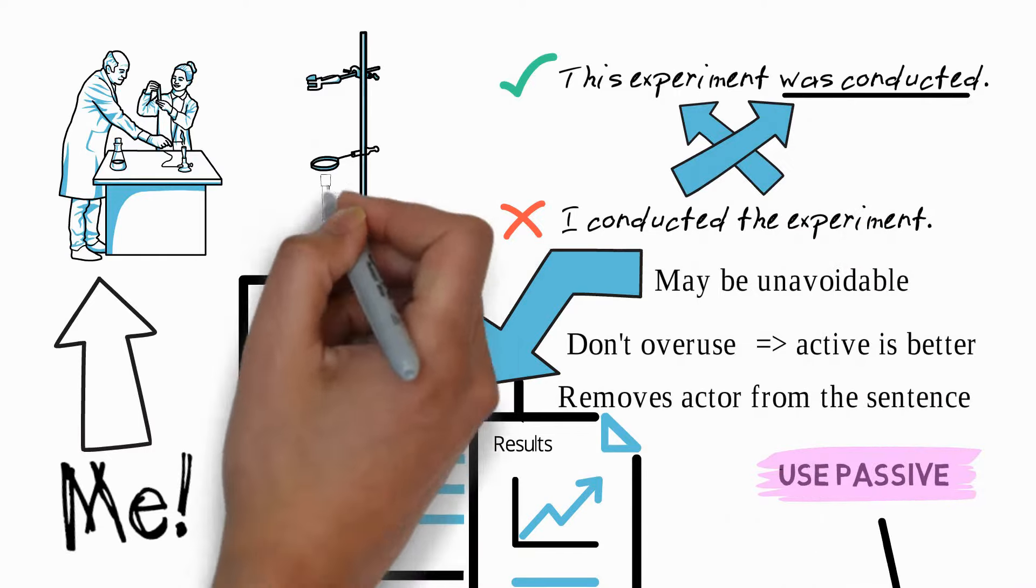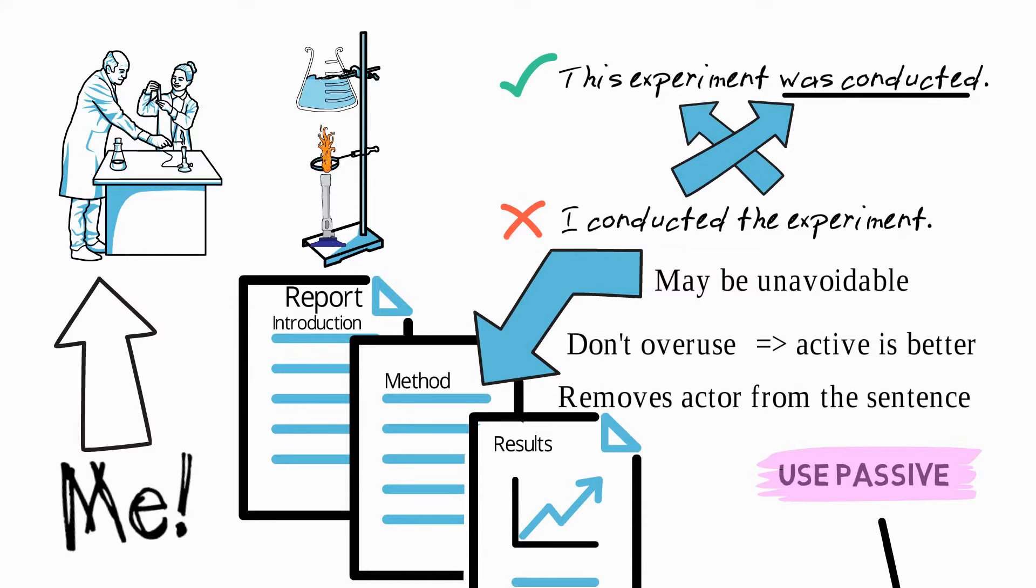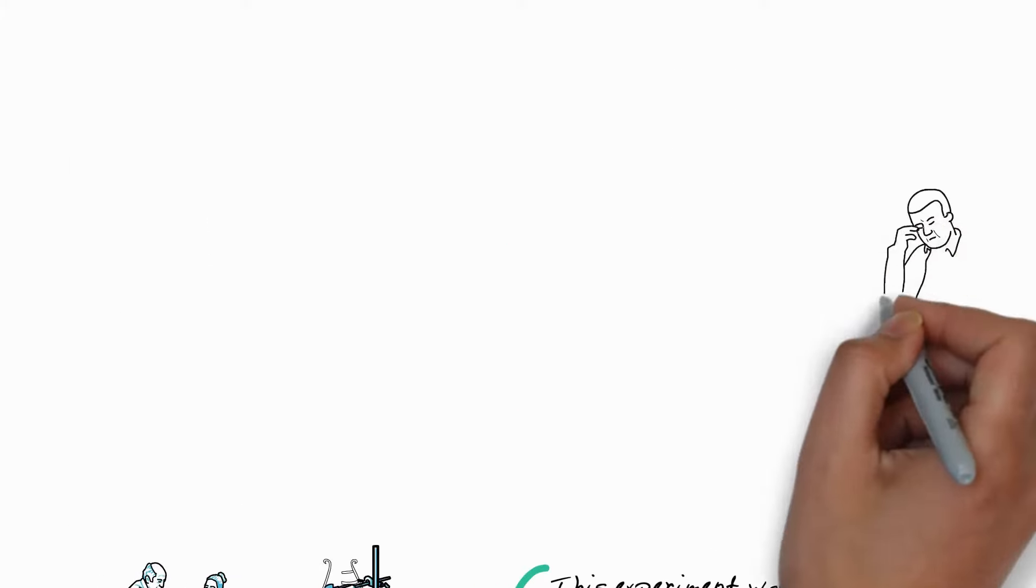In the second sentence, we don't know who conducted the experiment. We assume it's the impartial observer, and the focus therefore is very much the experiment itself.